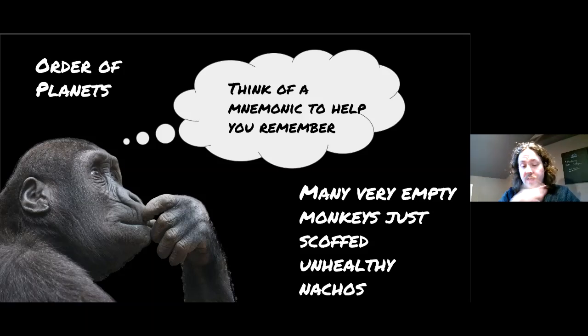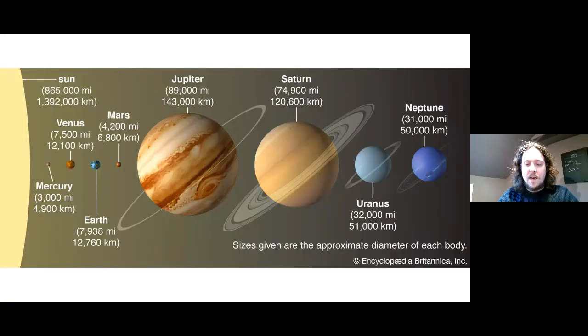If you take the first letter of each of those: M for Mercury, V for Venus, Earth, Mars, Jupiter, Saturn, Uranus, and then Neptune. You'll notice Pluto's not on the list. Pluto was declassified as a planet. There are eight planets now.